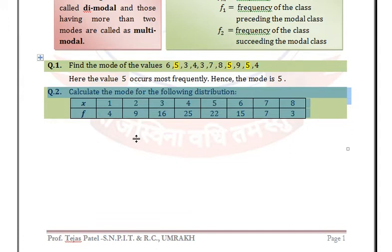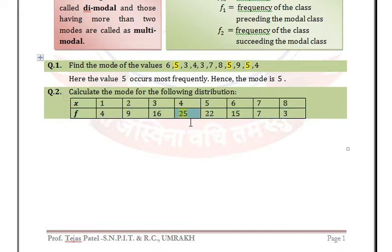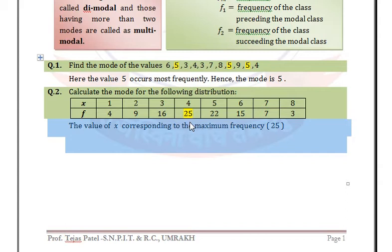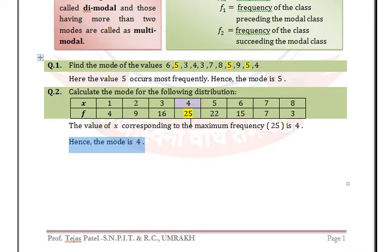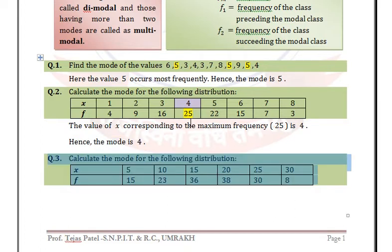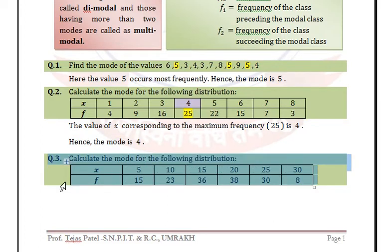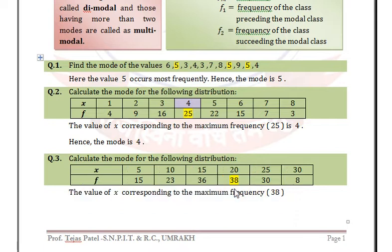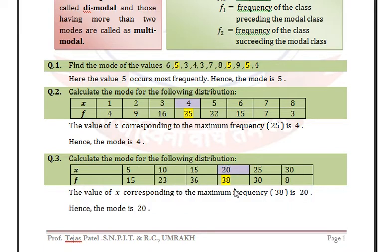In frequency distribution ungrouped data, we need to find the maximum frequency. We can see that the maximum frequency is 25 and the corresponding value of x is 4, so mode is 4. One more example: the maximum frequency is 38 and the value of x corresponding to 38 is 20, so mode is equal to 20.